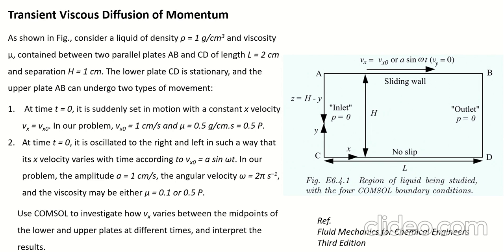In this video tutorial we are going to develop the velocity profile of a liquid contained between two plates: the lower plate and the upper plate. We will consider two cases. In the first case the upper plate is moving with a velocity of one centimeter per second. In the second case the upper plate, also called the sliding wall, is oscillating with velocity of A sin(ωt), where A is amplitude equal to one centimeter per second and ω is angular velocity equal to two radians per second. We will be taking two different viscosities: 0.1 and 0.5.